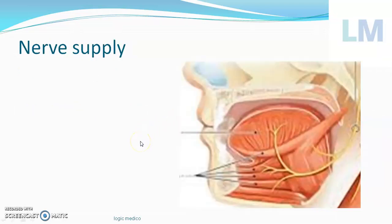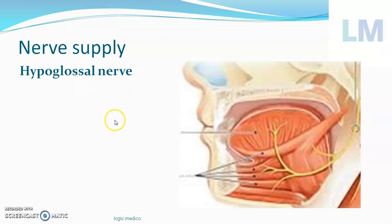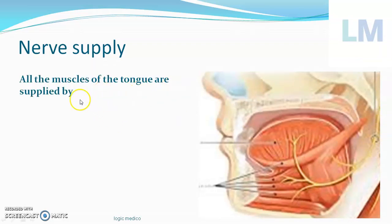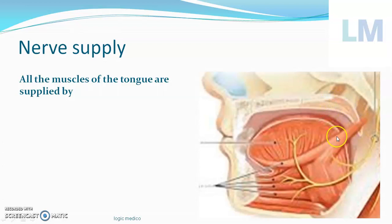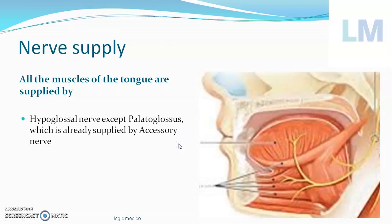How is the nerve supply of this inferior longitudinal muscle? It is by the nerve which runs underneath the tongue — called the hypoglossal nerve or the 12th cranial nerve. In fact, all the muscles of the tongue are supplied by the hypoglossal nerve or the 12th cranial nerve, except one muscle — the palatoglossus. This is the palate and this is the tongue — palatoglossus. So except the palatoglossus, all other muscles are supplied by the 12th cranial nerve. Whereas the palatoglossus is supplied by the 11th cranial nerve or the accessory nerve.